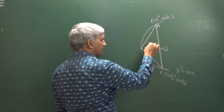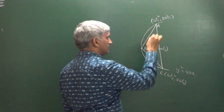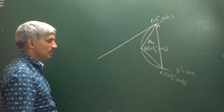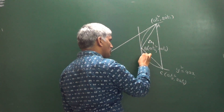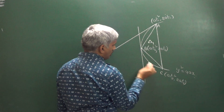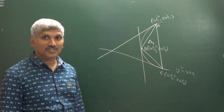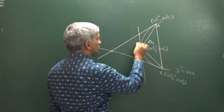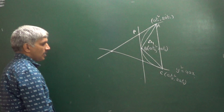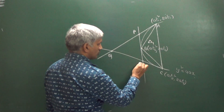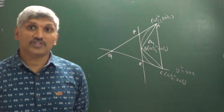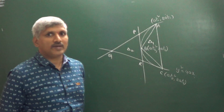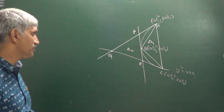Let us say the area of this triangle ABC is equal to delta₁. Next, at point A a tangent is drawn, at point B a tangent is drawn, and at point C also a tangent is drawn. These three tangents intersect at three points P, Q, and R. We have a triangle formed by the tangents with area delta₂. What about delta₁ and delta₂? That is what I am going to find out here.